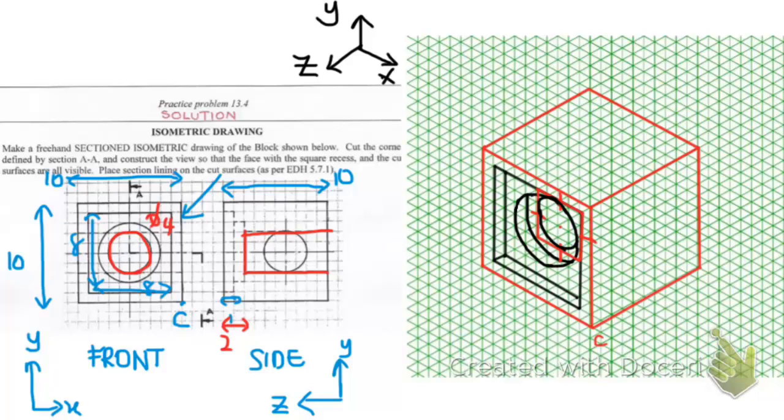So we can't see the entire inner circle because we are viewing it from this perspective. So now we are done with the front side. And we move on to the side view.